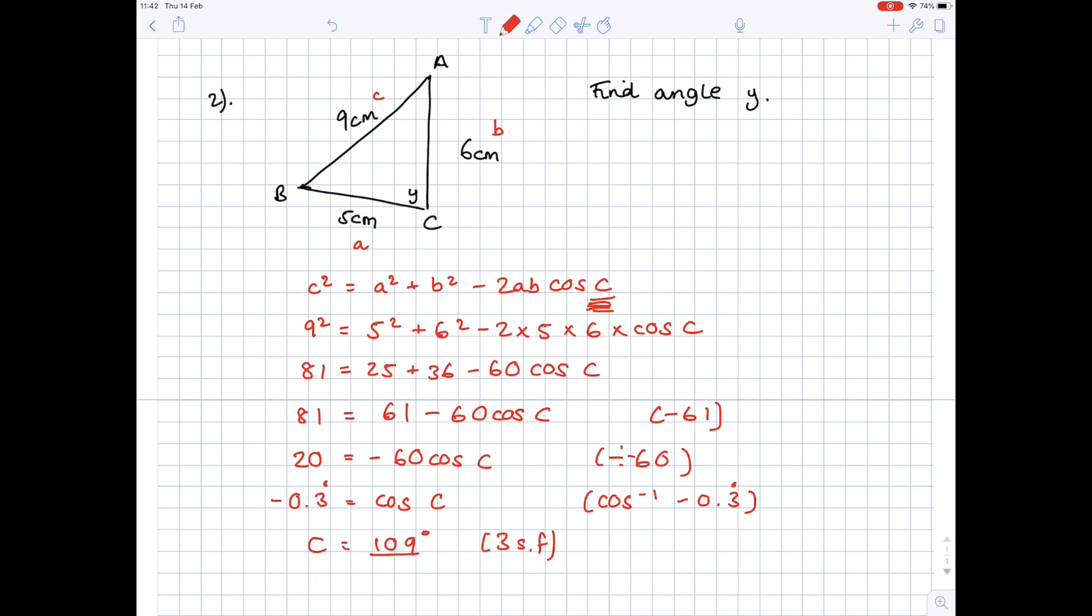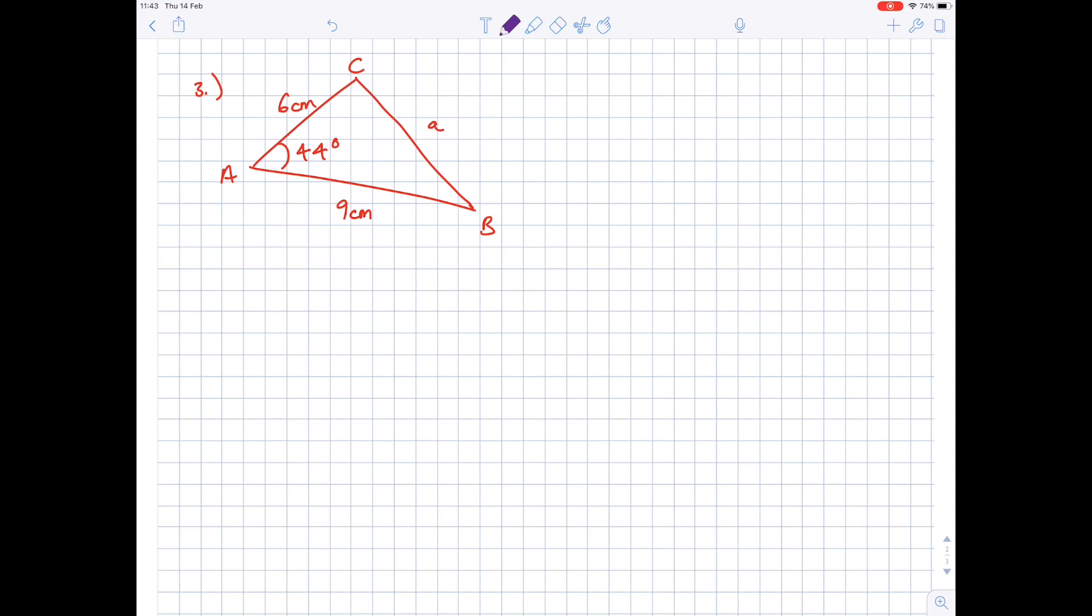In our third example, we're not looking for an unknown angle, we're looking for an unknown side, so we're trying to find length A. Because the unknown is A, we can actually write out the cosine rule in the original form, so A² = B² + C² - 2BC cos A. We're looking for A squared, so we'll keep that as A². B² is going to be 6² plus C² which is 9², minus 2 times 6 times 9 cos A. And A angle is 44.